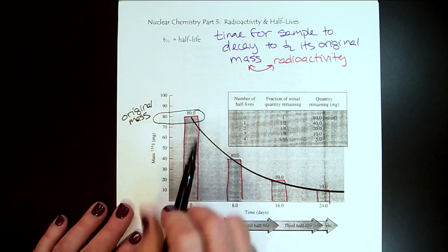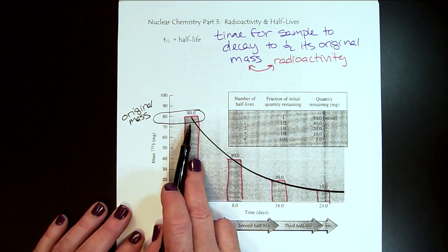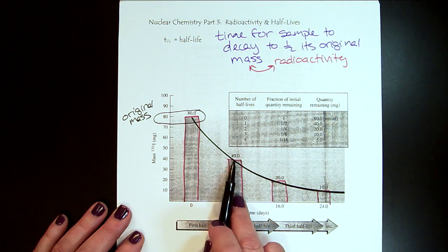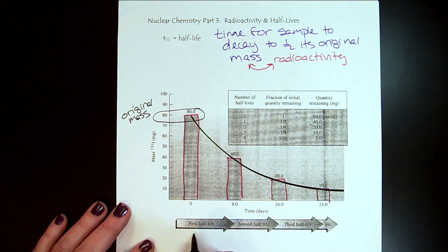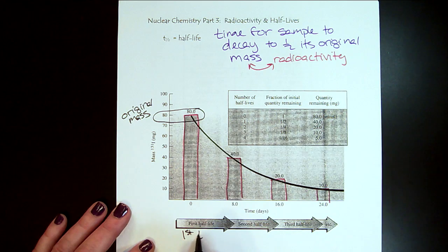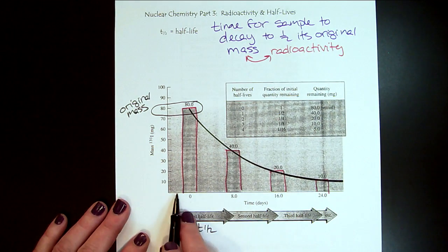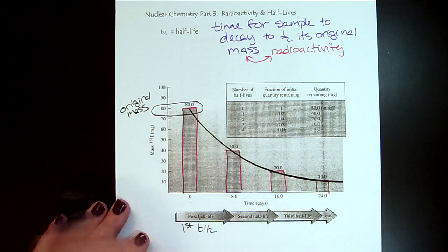So we look here and at the beginning of working with this sample, here is the original mass. We started with 80 milligrams of iodine-131. And now if we look, what's half of 80? Here's 40. So see, this is the first half-life. So eight days later.